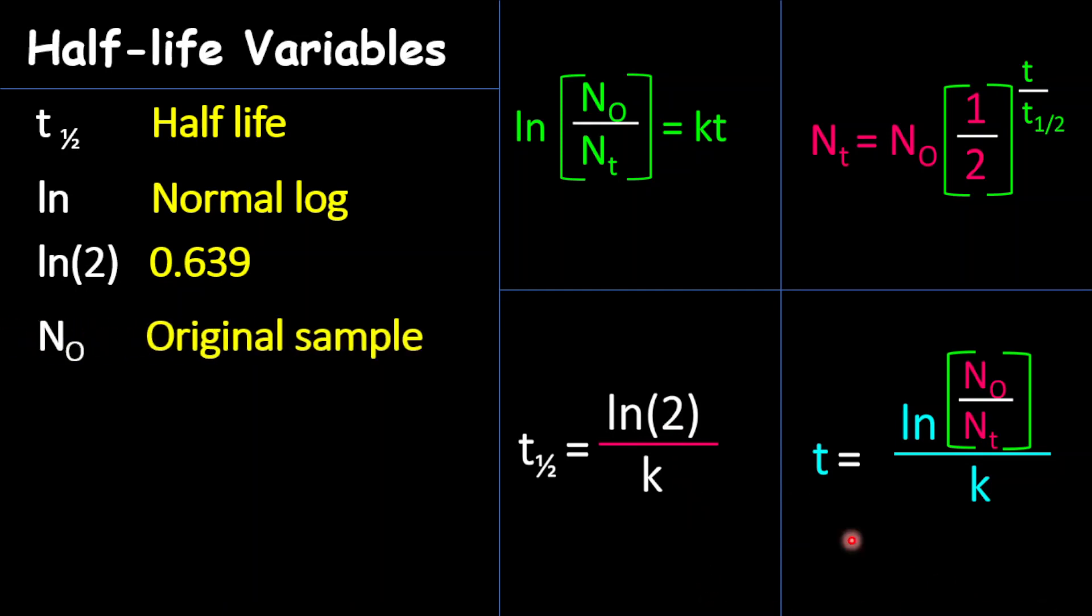You will also notice you see N₀, and N₀ represents the original sample. And what the original sample is, is the original amount, the original particles, the original mass. So you may see it represented in any of those formats. Again, it is relating to the amount that you're starting out with before decay even starts taking place, or the amount you start out with at a certain point. But it's always the starting amount.